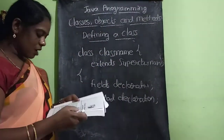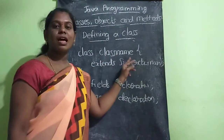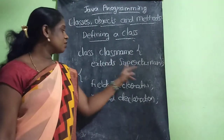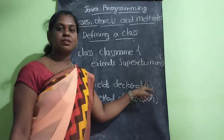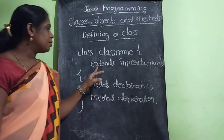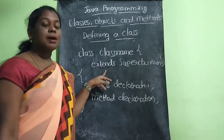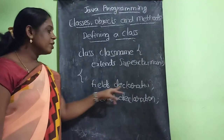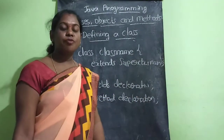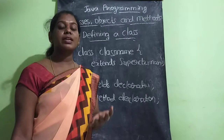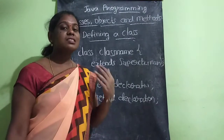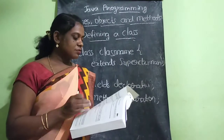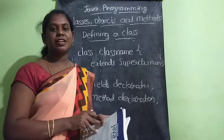So a class has: the keyword class, then class name, and optionally extends and a super class name if you are using inheritance. Otherwise just write class and class name. Within that you have fields declaration and then method declaration. Fields are the variables - you are declaring the variables which are the instances of the class.